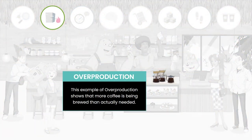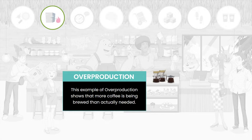Overproduction means producing more than, or much sooner than, required. This tends to happen when we produce in anticipation of the customer's request, but we can prevent it by producing only in response to the customer's request. In addition, overproduction creates inventory waste, such as extra copies of reports, additional production for inventory, and redundant storage, hard and soft.